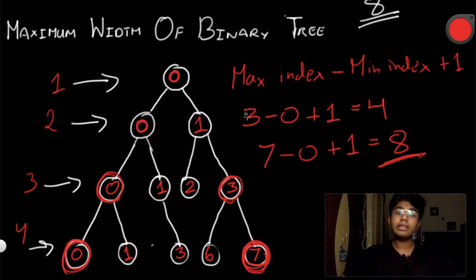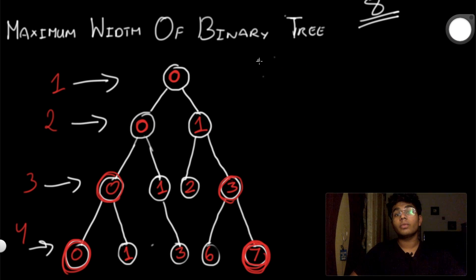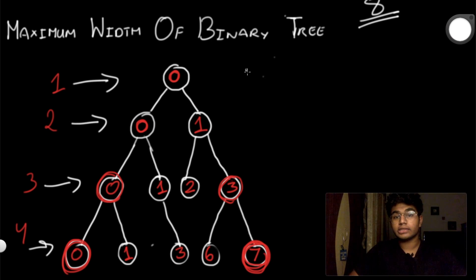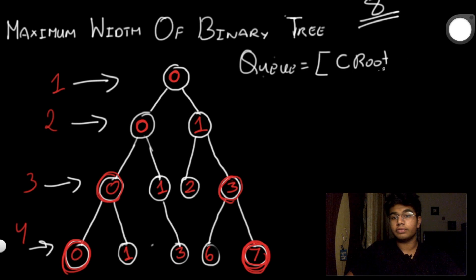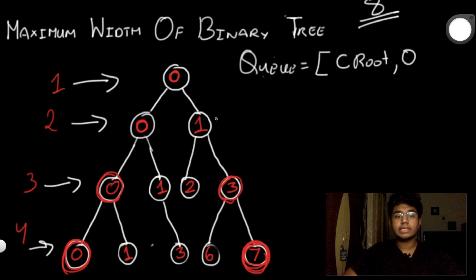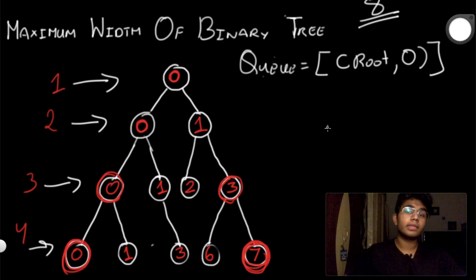Now let's implement a queue to find the maximum width. We're going to set our queue to contain the root as a tuple — the root node and its index value. In this case the index starts at zero, so our queue initially contains (root, 0).